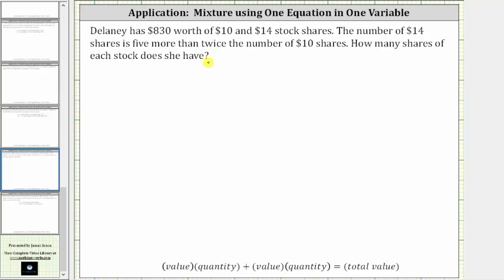To begin, you need to write expressions for the number of $10 shares and the number of $14 shares. Since we're told the number of $14 shares is five more than twice the number of $10 shares, let's first let x equal the number of $10 shares.